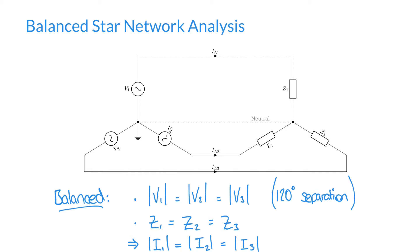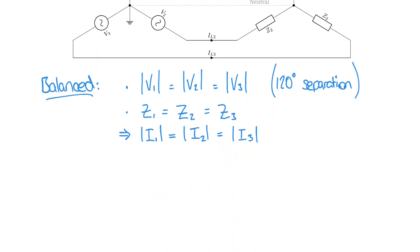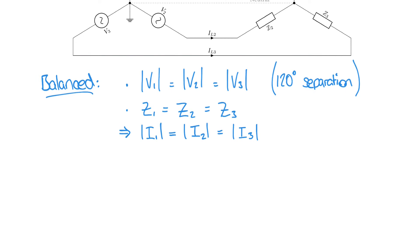In later videos we're going to look at unbalanced networks where there will be a current flow, and we'll also look at something called neutral displacement where there is an imbalance but that neutral wire isn't present. We'll see the consequences of that in a later video. For the purposes of this example, let's say that we have three voltages. We'll call them V1, V2, and V3 as they are in the diagram.